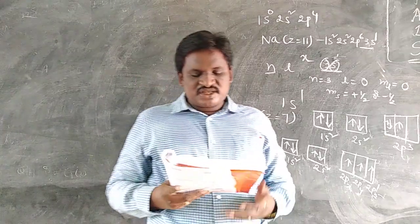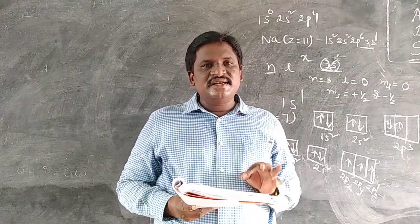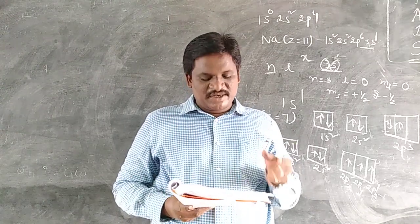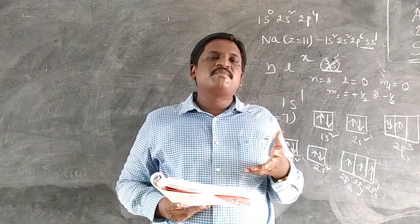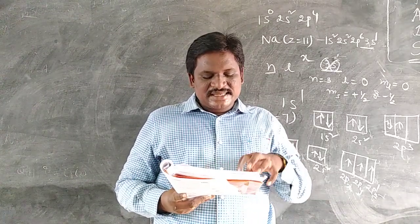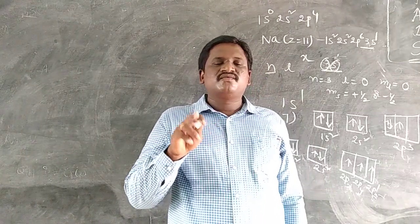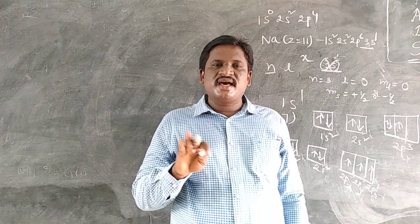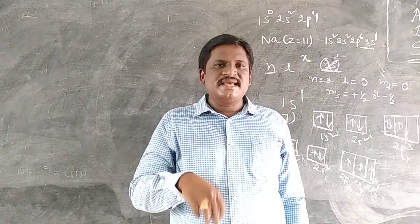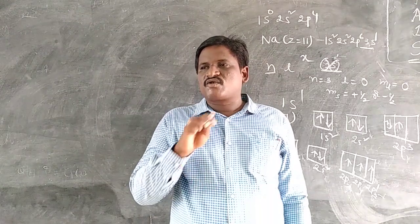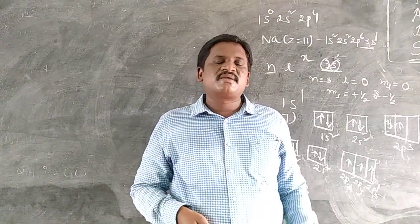Why are there exceptions in writing the electronic configuration of chromium and copper? Elements which have half-filled or completely filled orbitals have greater stability. So chromium and copper electrons in 4S and 3D are redistributed to attain stability by acquiring half-filled or completely filled orbitals. For chromium, Z equals 24: [Ar] 4S2 3D4 becomes [Ar] 4S1 3D5. Similarly, copper becomes [Ar] 4S1 3D10. Chromium has a half-filled d-orbital and copper has a fully-filled d-orbital, giving greater stability.